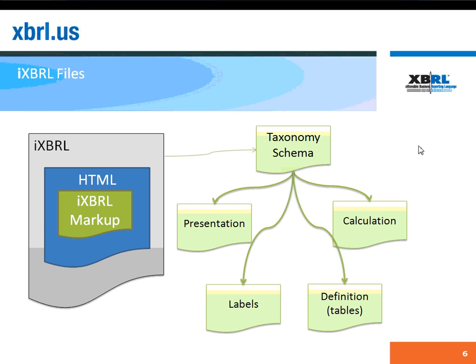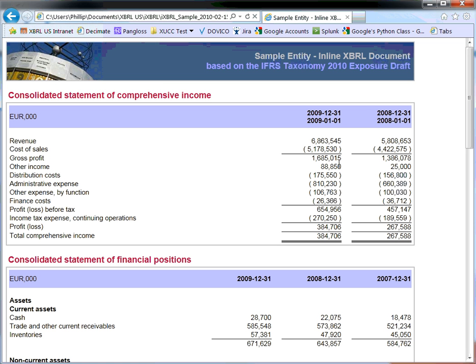Since an iXBRL document is an HTML document, it can be rendered in a browser, and the extra information in the document identifying the XBRL components is essentially ignored by the browser when rendered. I'm going to show you an example. The first one is in Internet Explorer — this is an iXBRL document taken from a sample from the IFRS. Here we're looking at a set of financial statements, being rendered exactly as regular HTML.